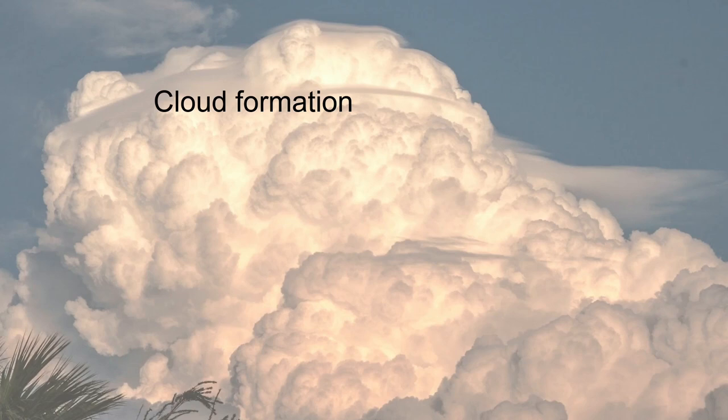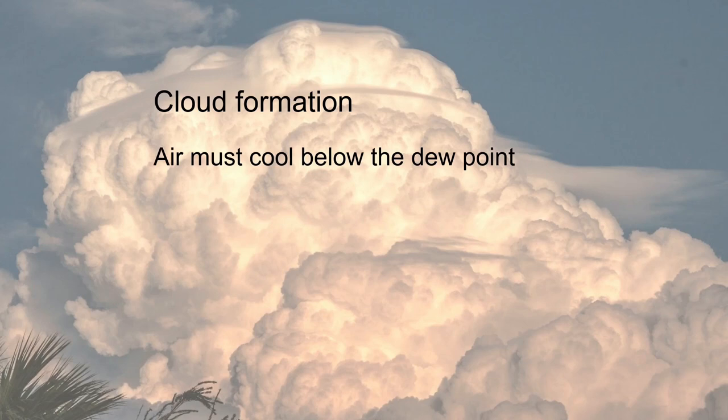So to form water droplets the air must cool below the dew point. In the previous lesson we have looked at two mechanisms in which the air can cool: cooling by radiation and cooling by contact, also called advection cooling. This is how dew and frost are formed.